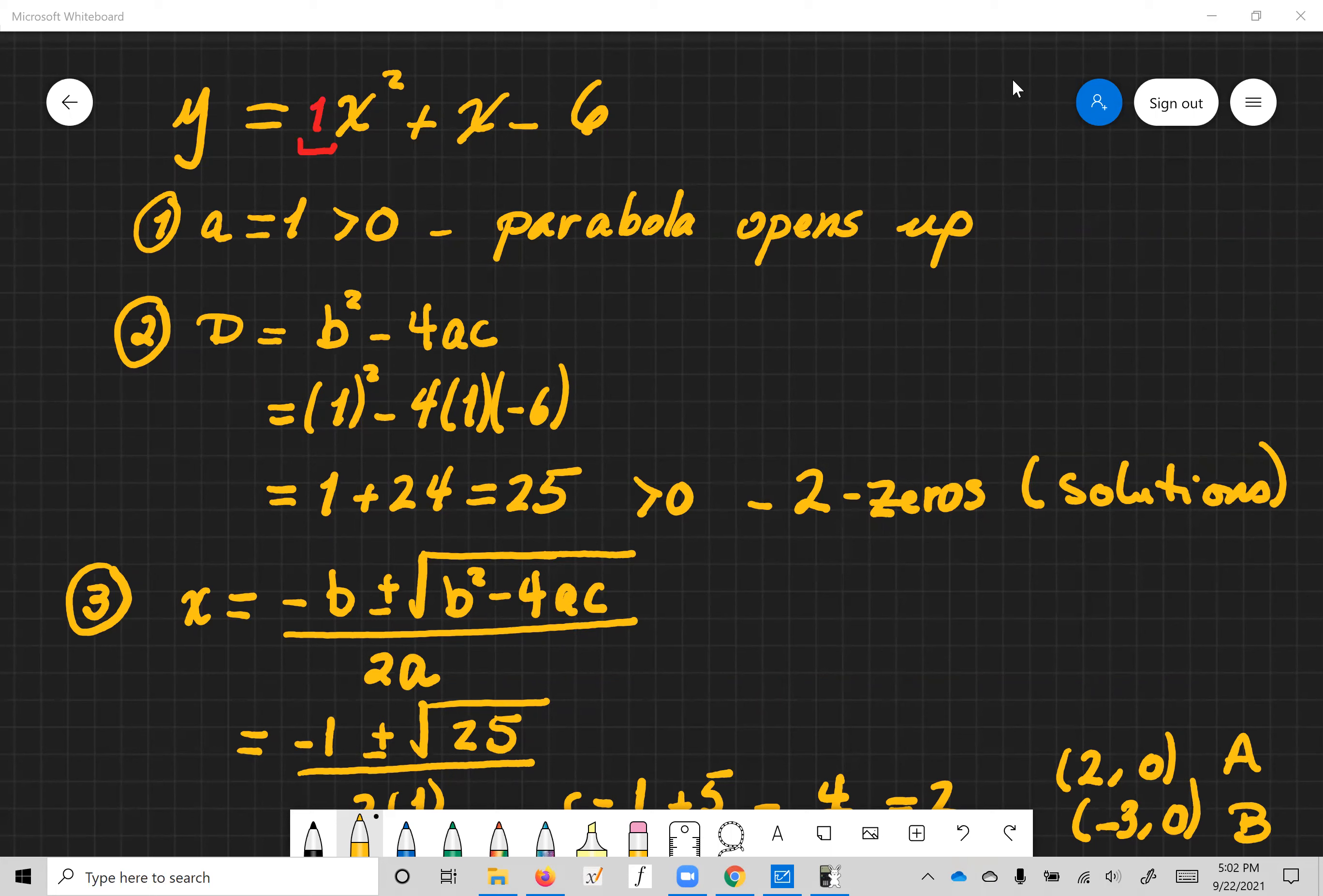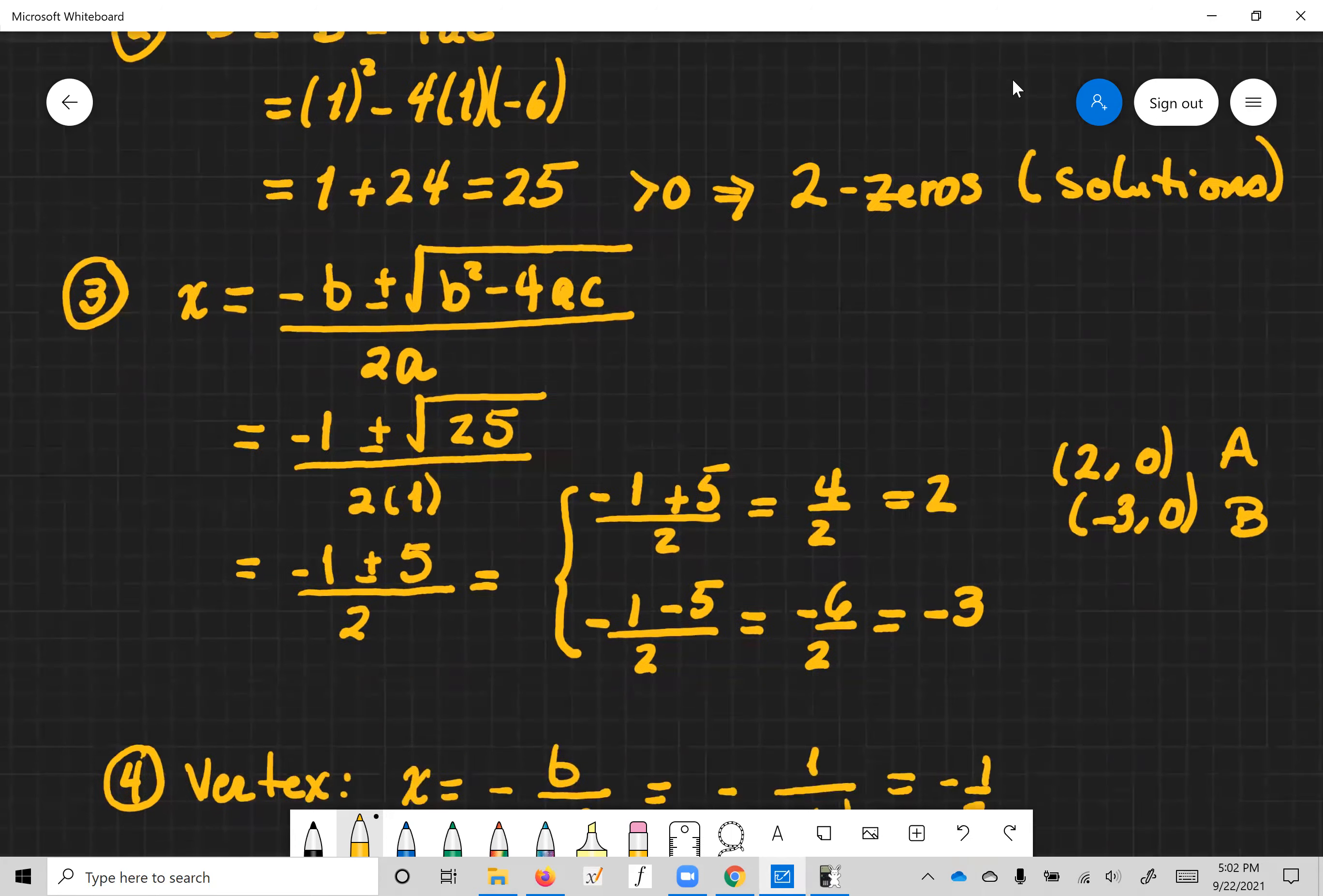That means we have two zeros. This means we have two zeros or two solutions. Now let's find these solutions, so we use the quadratic formula.